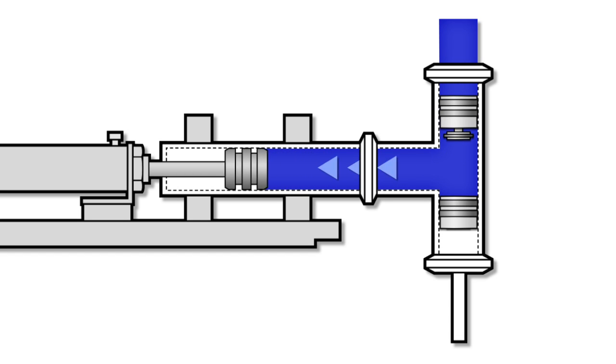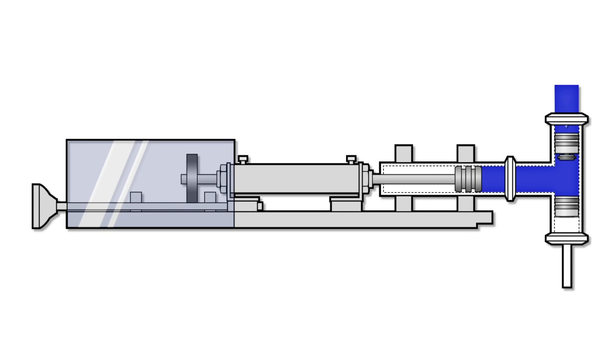The volume of the product chamber determines the volume of product delivered to the container. The larger the product cylinder and the longer the intake stroke, the more available volume for filling.